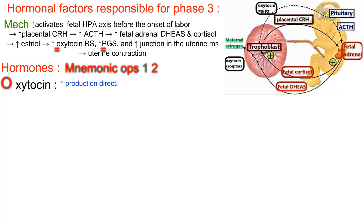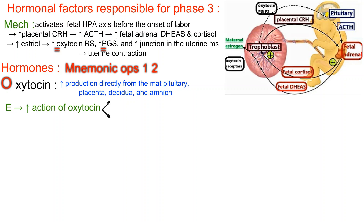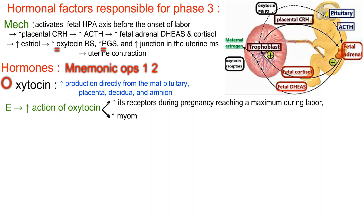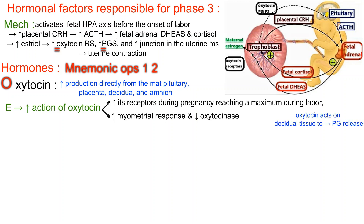O: Oxytocin — increased production from maternal pituitary, placenta, decidua, and amnion. Estrogen promotes oxytocin action by increasing the number of its receptors during pregnancy, reaching maximum during labor, increasing myometrial response, and decreasing oxytocinase. Oxytocin acts on decidual tissue to promote prostaglandin release.